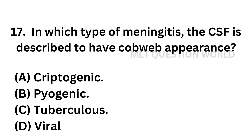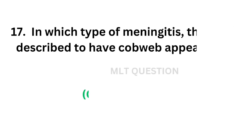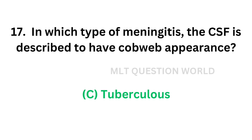Question number seventeen: In which type of meningitis is the CSF described to have cobweb appearance? Option A: Cryptogenic meningitis, Option B: Pyogenic meningitis, Option C: Tuberculous meningitis, Option D: Viral meningitis. The correct answer is Option C — Tuberculous meningitis. In this condition, CSF will have cobweb appearance.